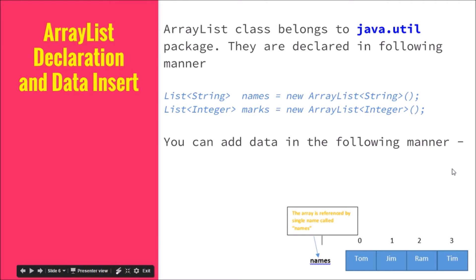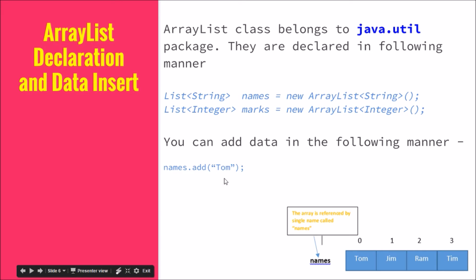How do you add data in ArrayList? You use the add method. In arrays we used index notation like 'names[0] = Tom', whereas in ArrayList you say 'names.add(Tom)' — it will be automatically inserted at the first available position. Then 'names.add(Jim)' goes to position one, and it keeps on adding at the next available position.